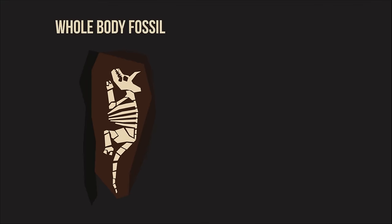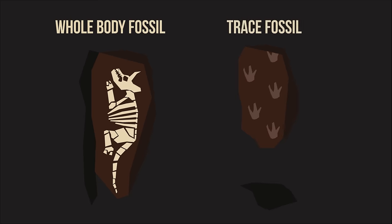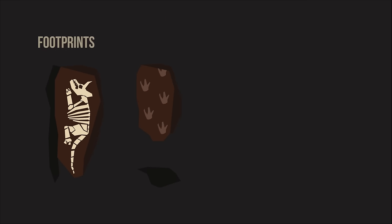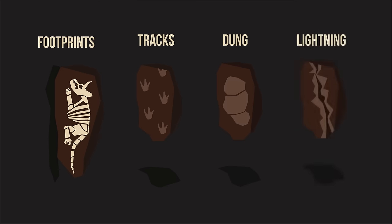While whole-body fossils can be created in this way, so can trace fossils. Trace fossils are the fossilized remains of things animals or plants have left behind. This includes footprints, tracks, dung, and even lightning strikes.